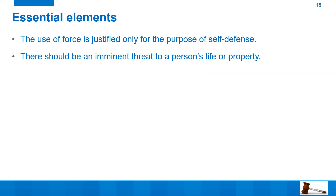Essential elements for private defense: number one, the use of force is justified only for the purpose of self-defense — not otherwise. Second, there should be an imminent threat to a person's life or property. Imminent means a nearby threat — someone is actively attacking you. If somebody is just standing on a road, you cannot go and attack them and call it private defense. These two essential elements are required for this defense.